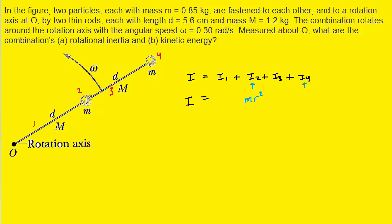If we look at Particle 2, we can see that the distance from that particle to the rotation axis is marked as d. So we can plug in d for this distance, making it m times d squared. For Object 4, the distance from it to the rotation axis is not 1d, but actually 2d. So we'll have mass times 2d squared, which is 4d squared, giving us 4 times the mass times d squared.